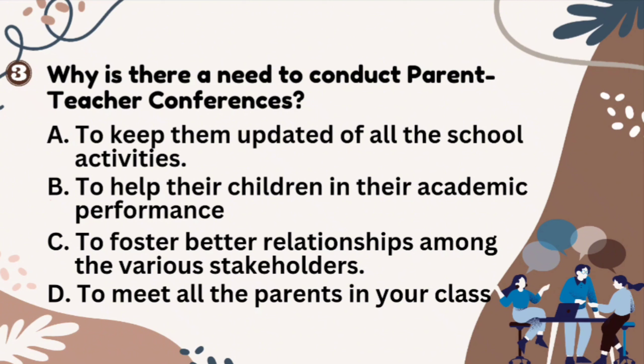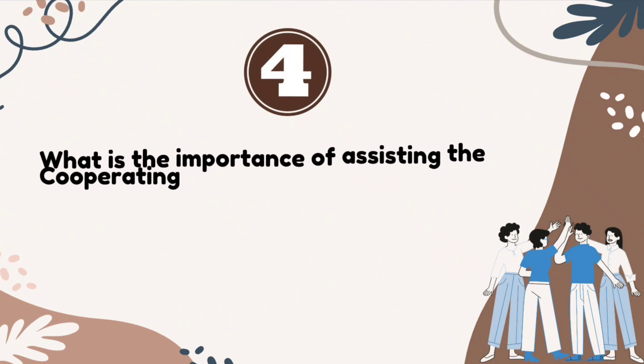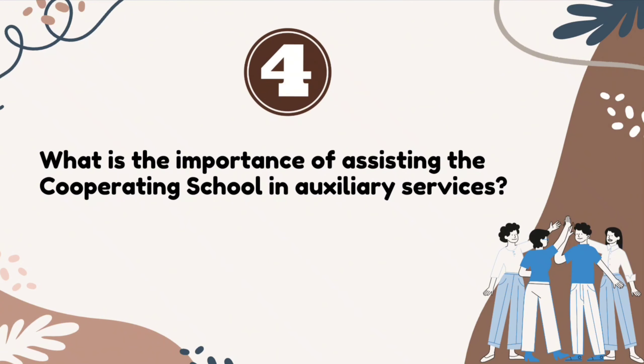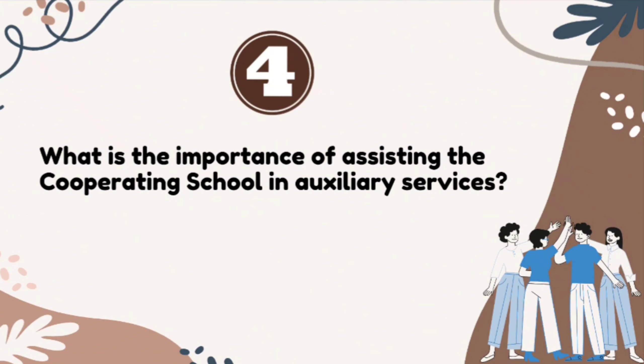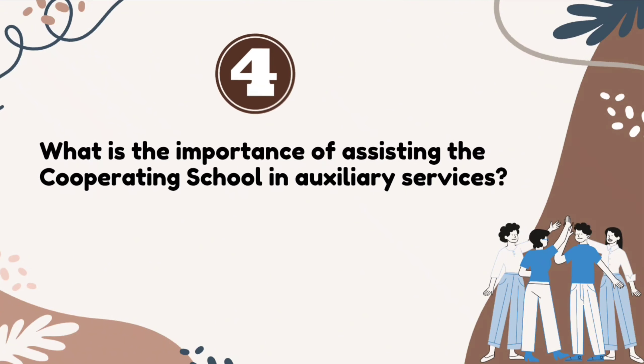The correct answer is Letter B, to help their children in their academic performance. Number 4: What is the importance of assisting the cooperating school in auxiliary services?